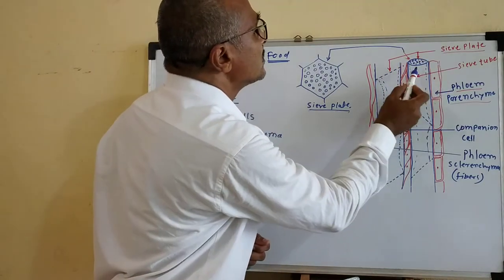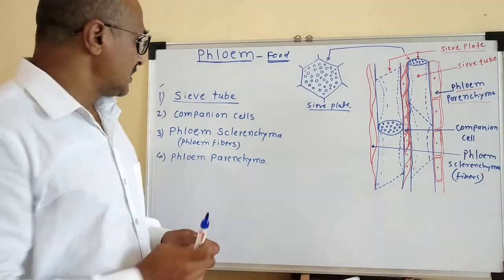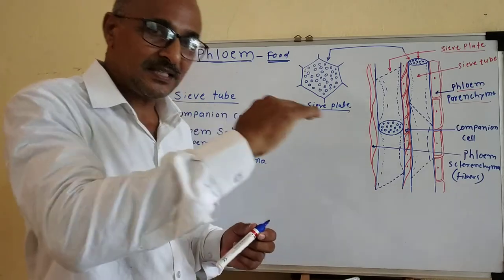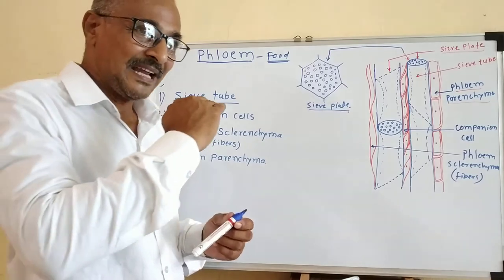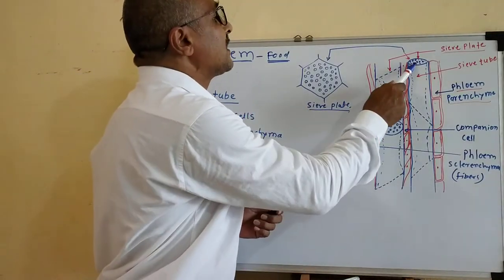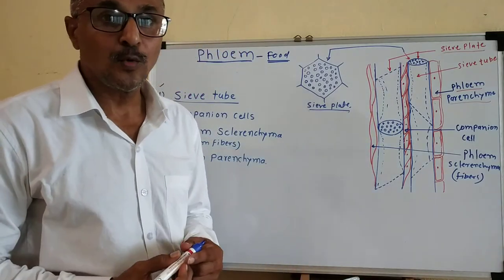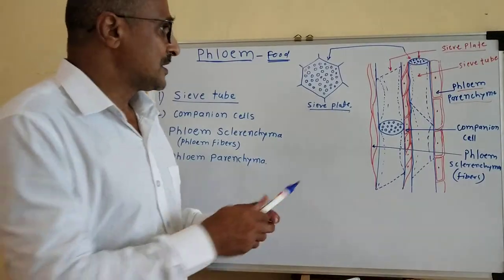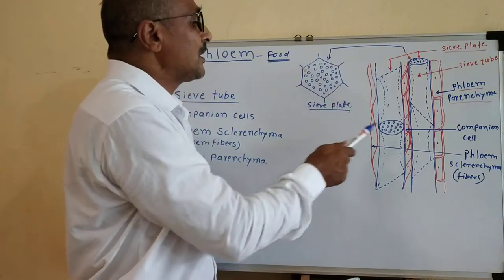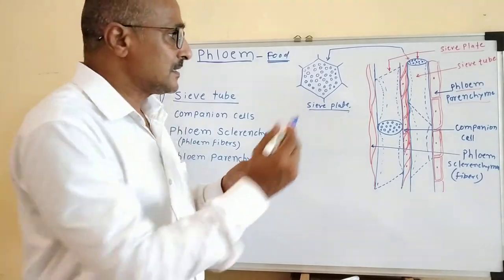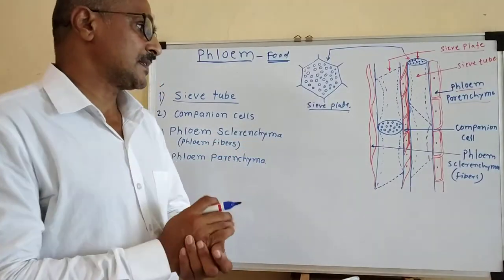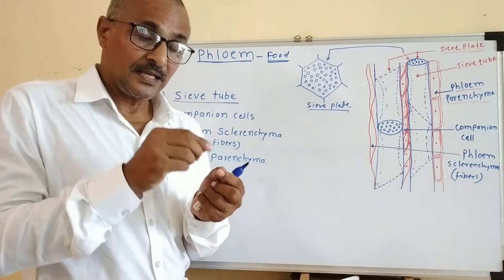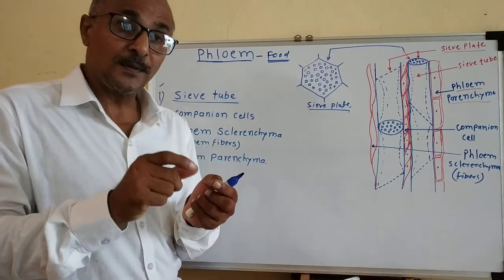This is a tube, and this is another tube of sieve tube. This tube-like structure is having partitions, or having end walls with such partitions. And that partition is called as sieve plate. That sieve plate may be diagonally placed or it may be transversely placed, and it is situated inside the tube.